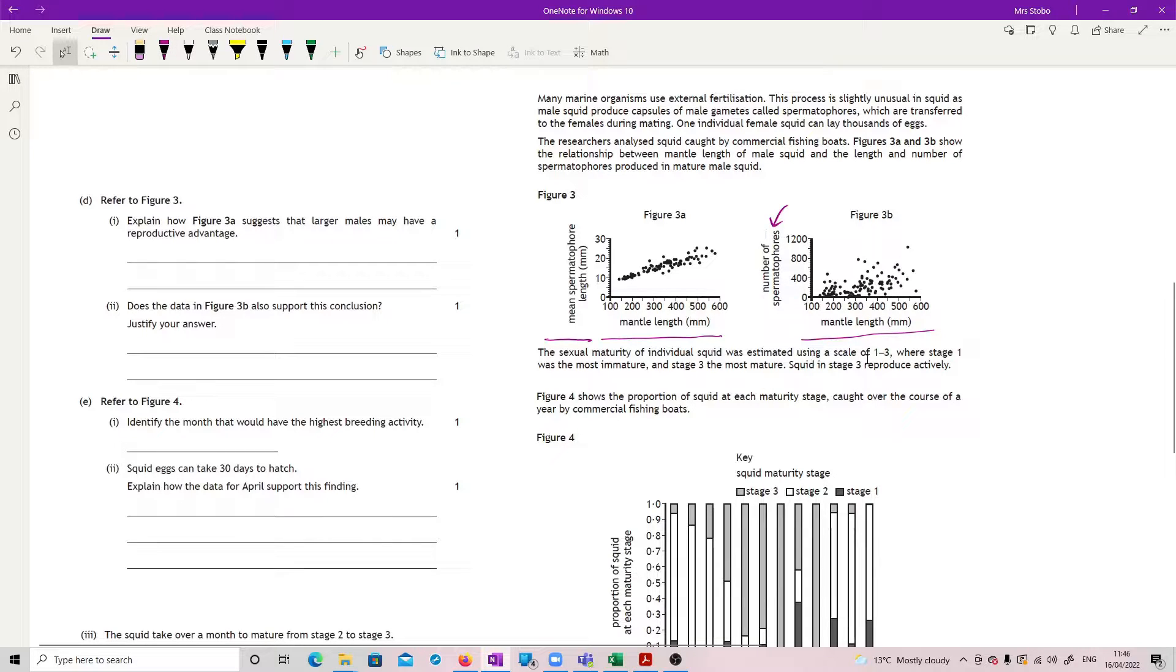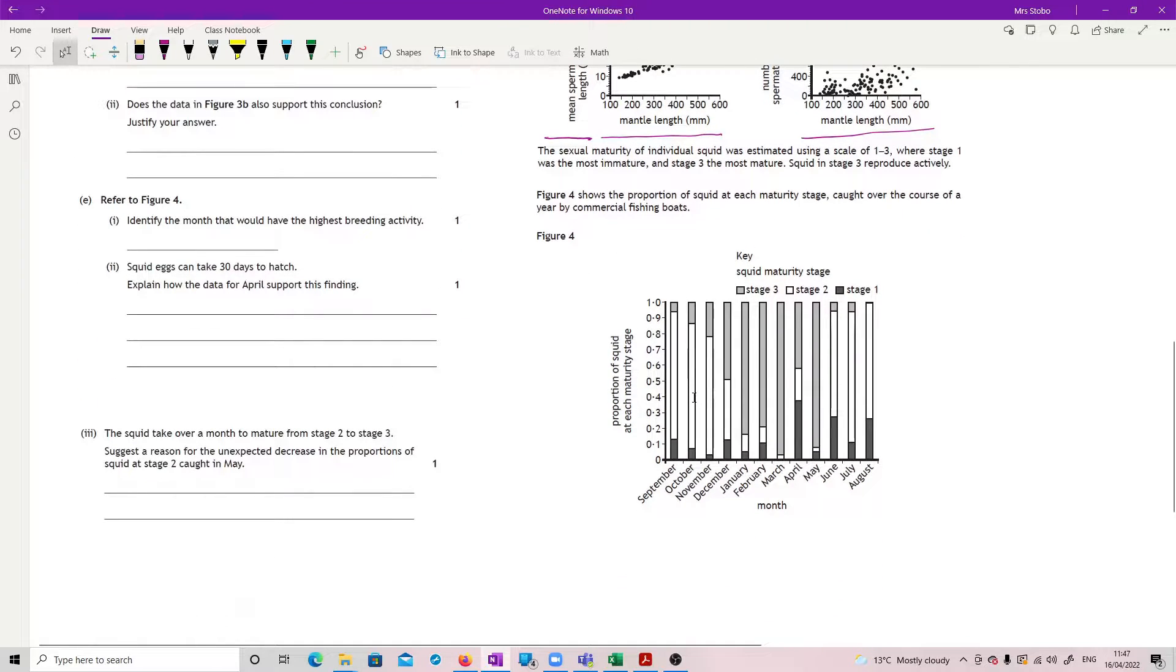The sexual maturity of individual squid was estimated using a scale of 1 to 3. Stage 1 was the most immature, stage 3 the most mature. If the squid are in stage 3, they reproduce actively.